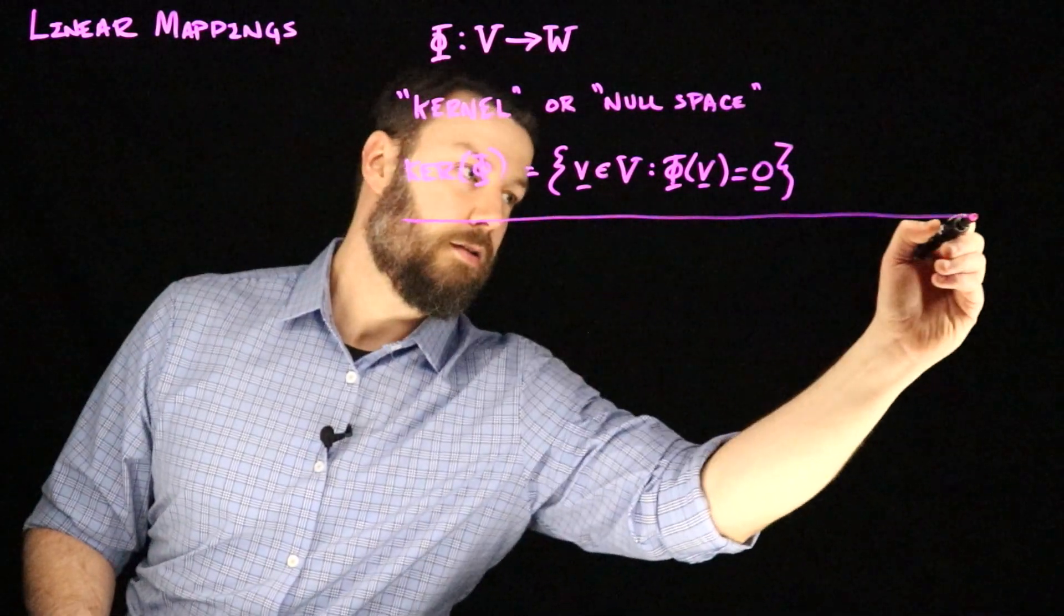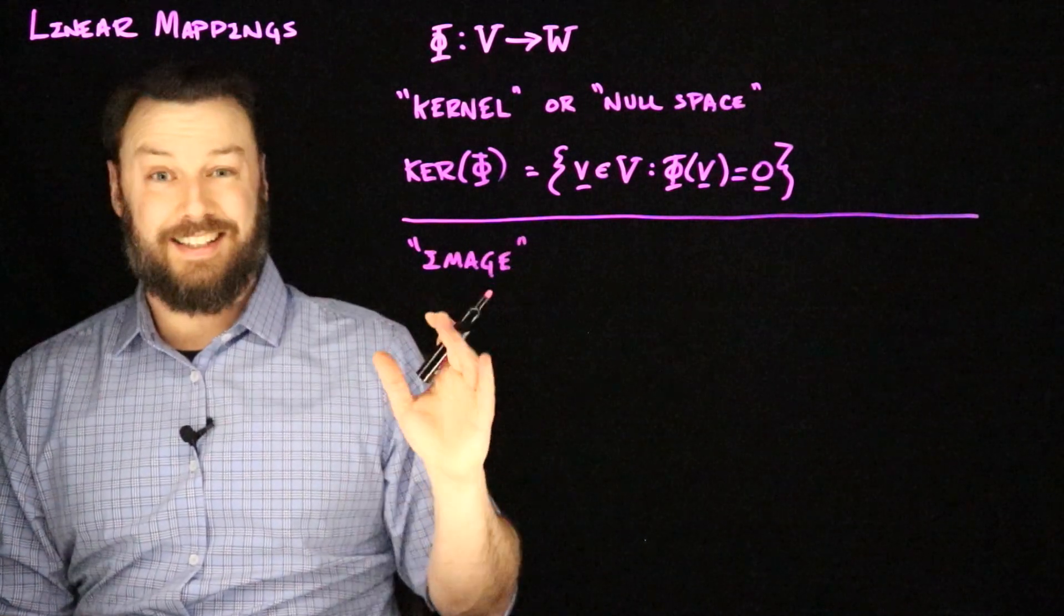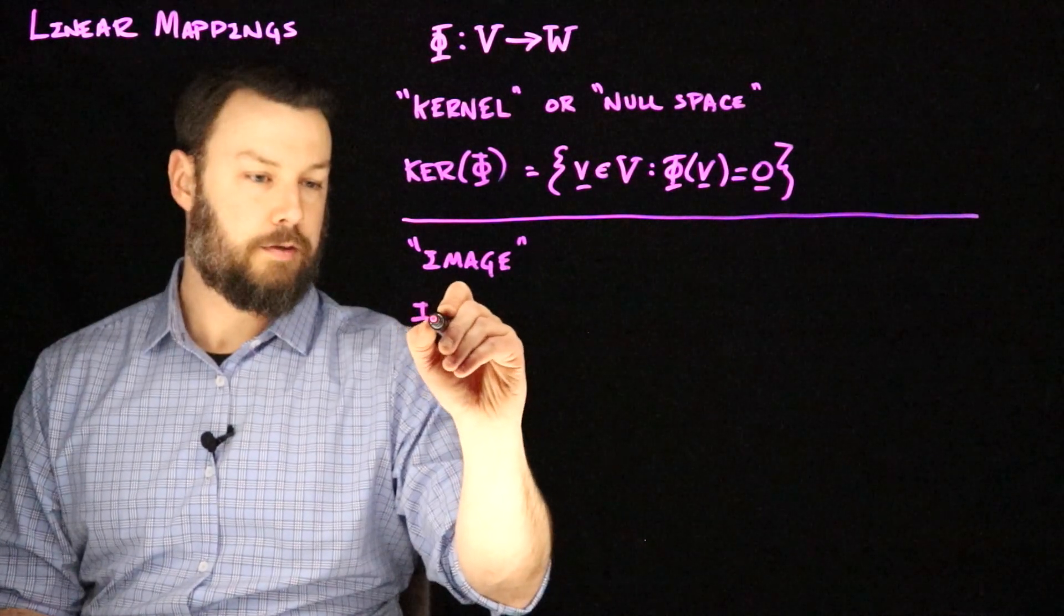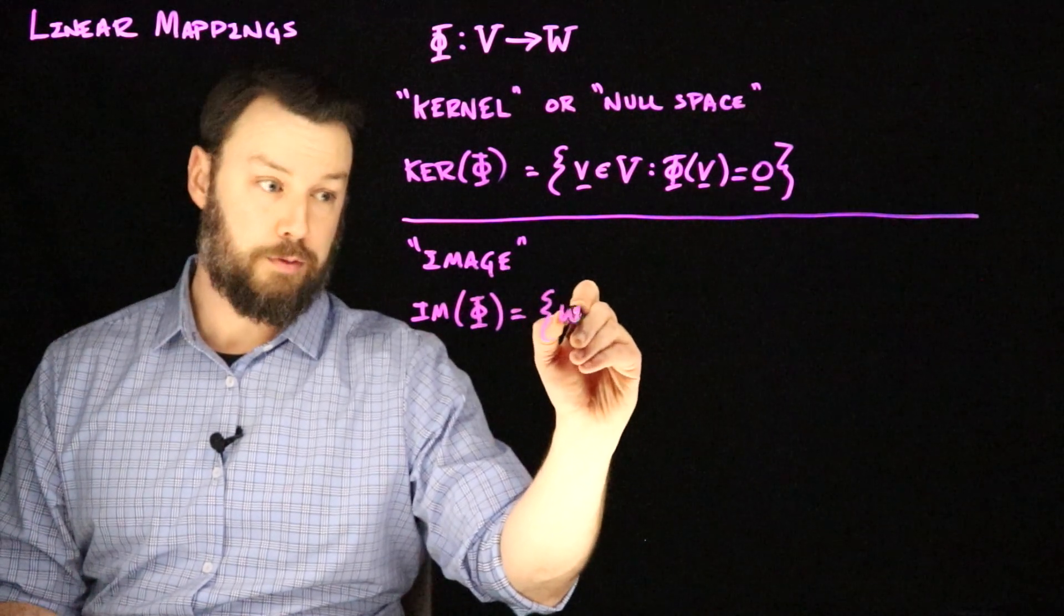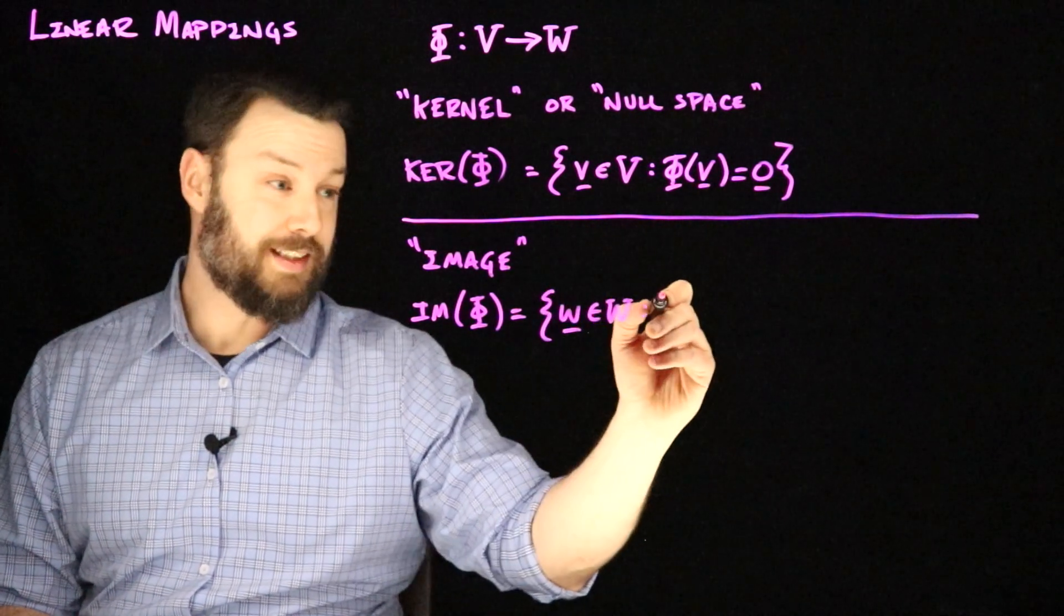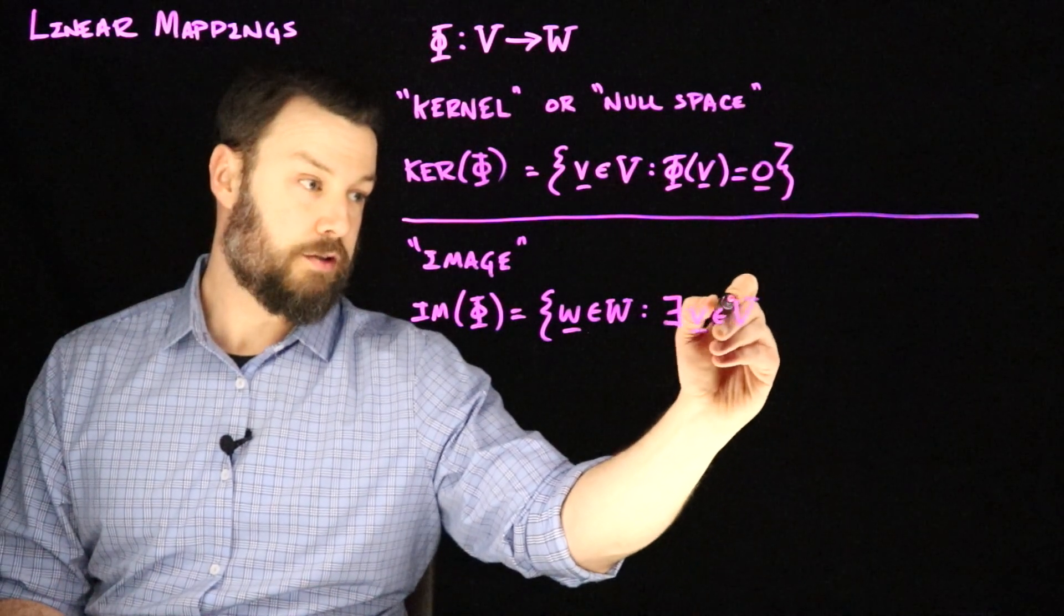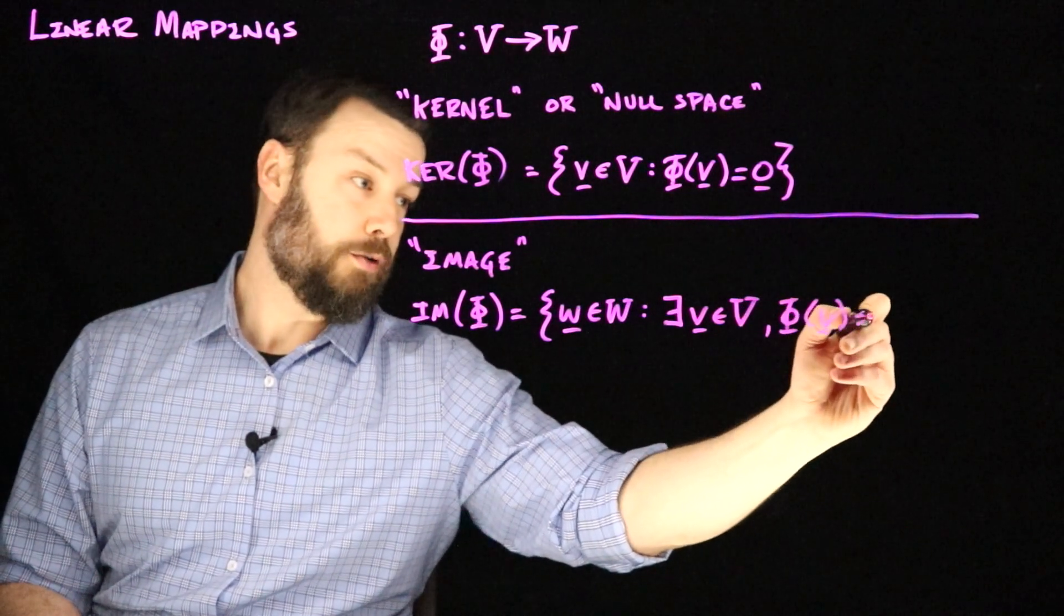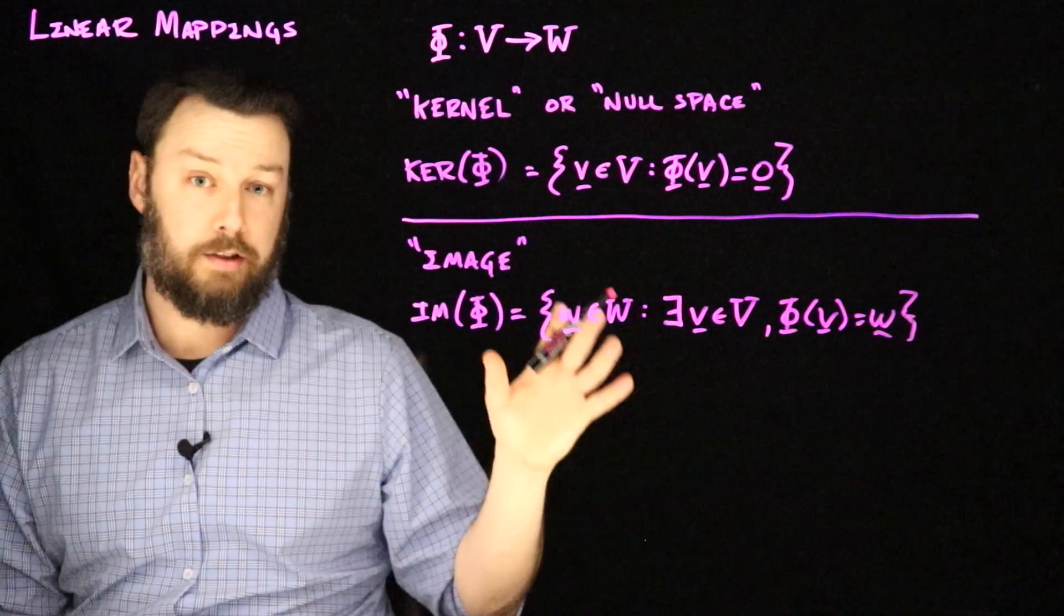Another important concept is the idea of the image. The image is the set of W's that you can get to by applying Phi. So the image of Phi is the W's, so these are the things in the output such that there exists a V in V, such that we have an input where hitting V gives you W. So these are the outputs that you can get for some V after you apply Phi.